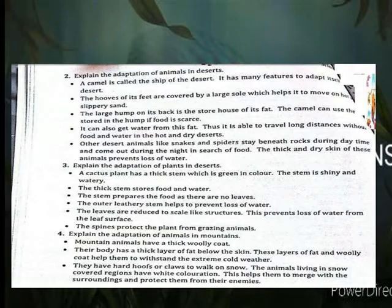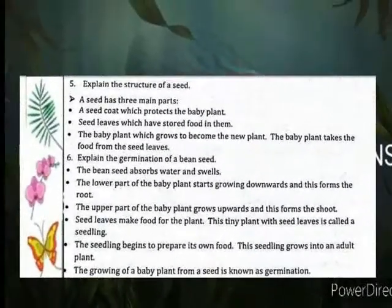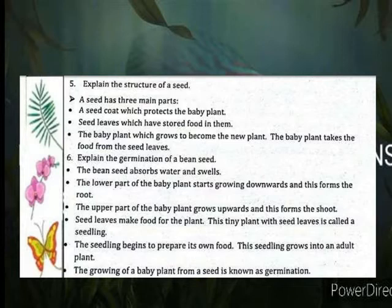Explain the structure of a seed. The seed has three main parts. The seed coat protects the baby plant. The seed leaves have stored food in them. The baby plant grows to become the new plant, taking food from the seed leaves.